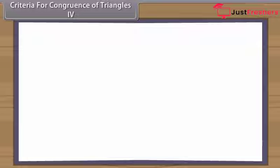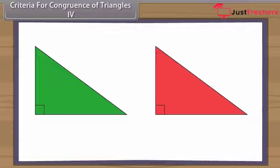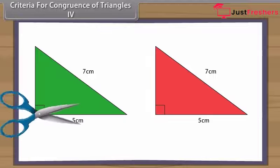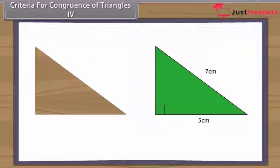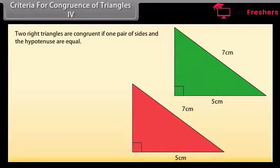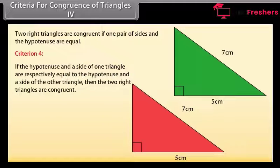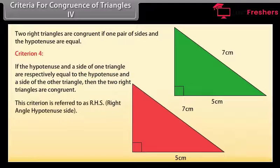Criteria for Congruence 4: Construct two right-angled triangles with hypotenuse equal to 7 cm and one side equal to 5 cm each. Cut them out and place one over the other — they cover each other completely and so are congruent. Criterion 4 — RHS (Right angle Hypotenuse Side): if the hypotenuse and a side of one right triangle are respectively equal to the hypotenuse and a side of the other, then the two right triangles are congruent.